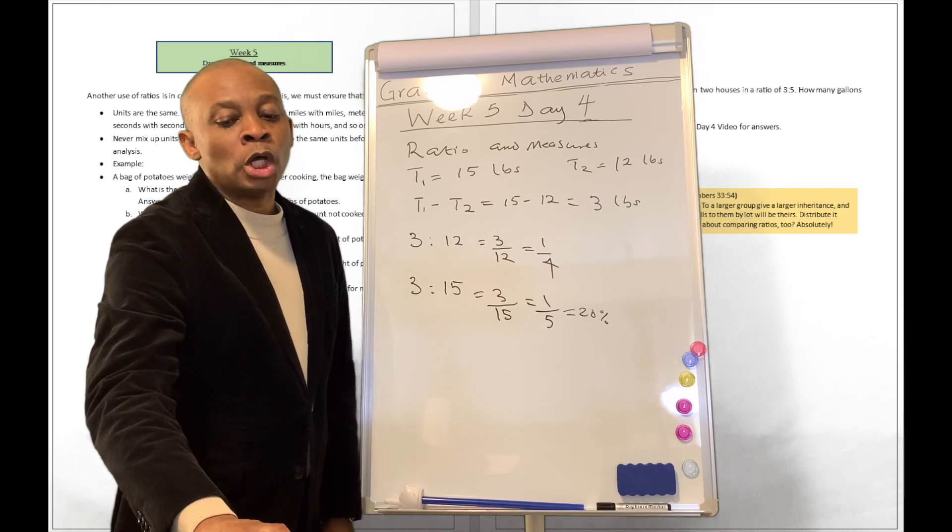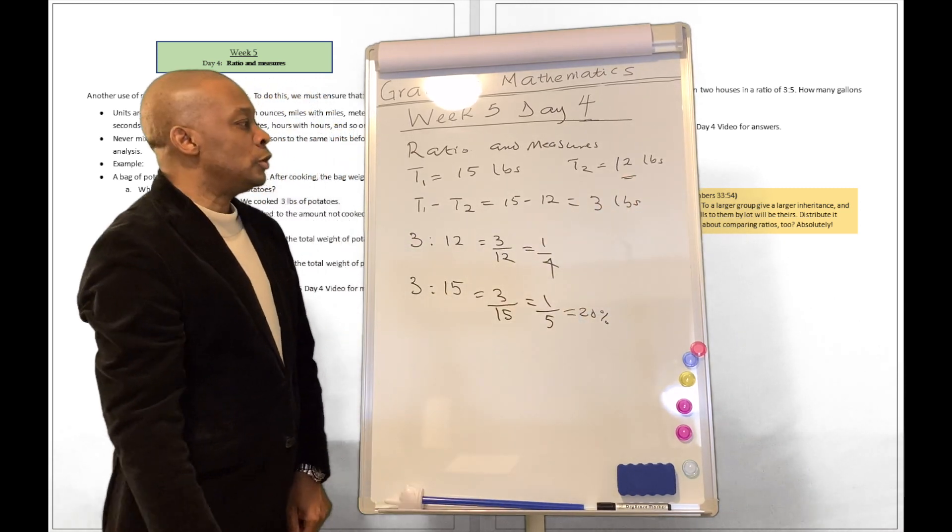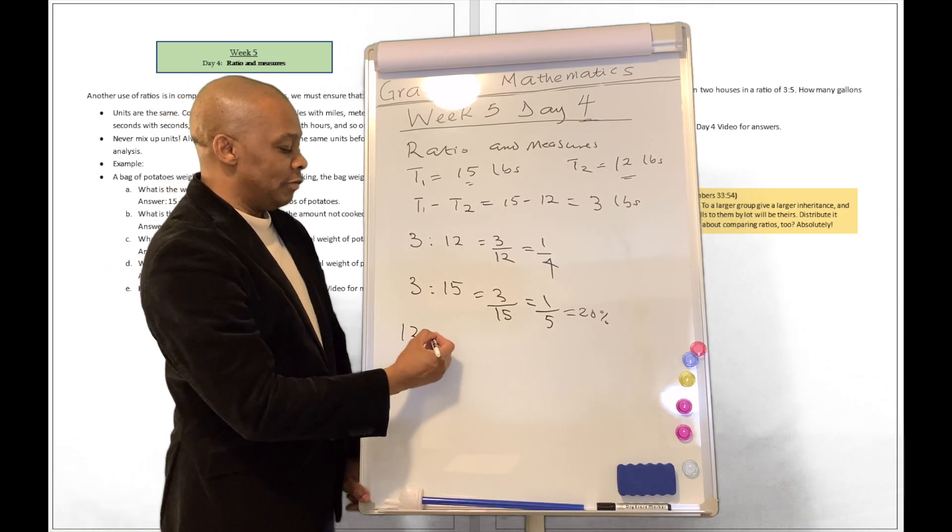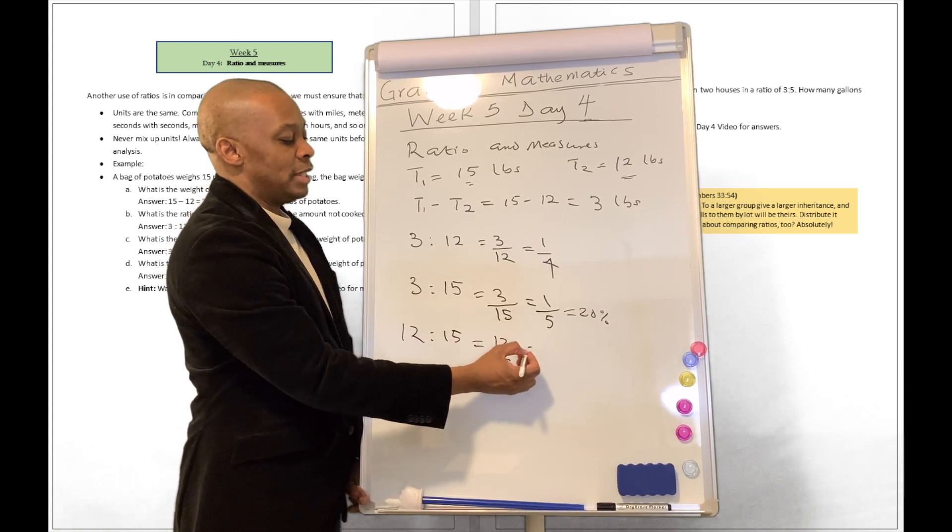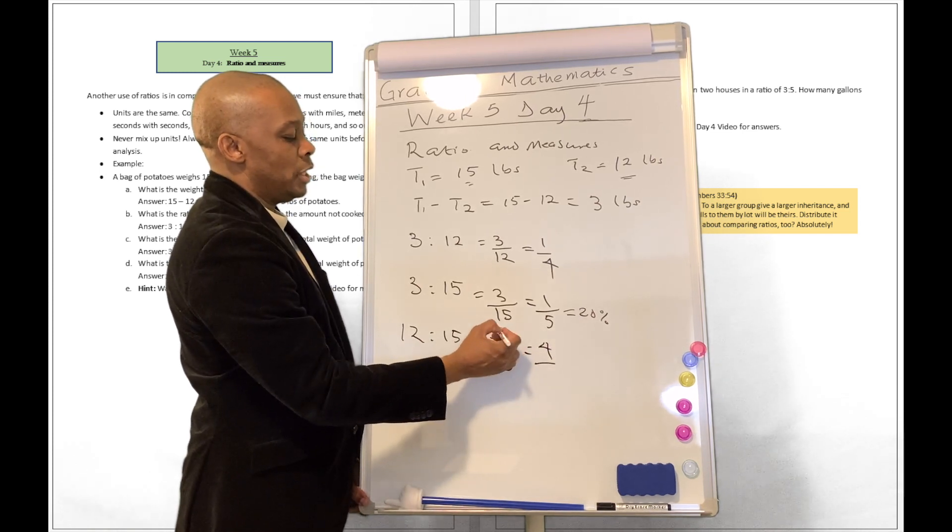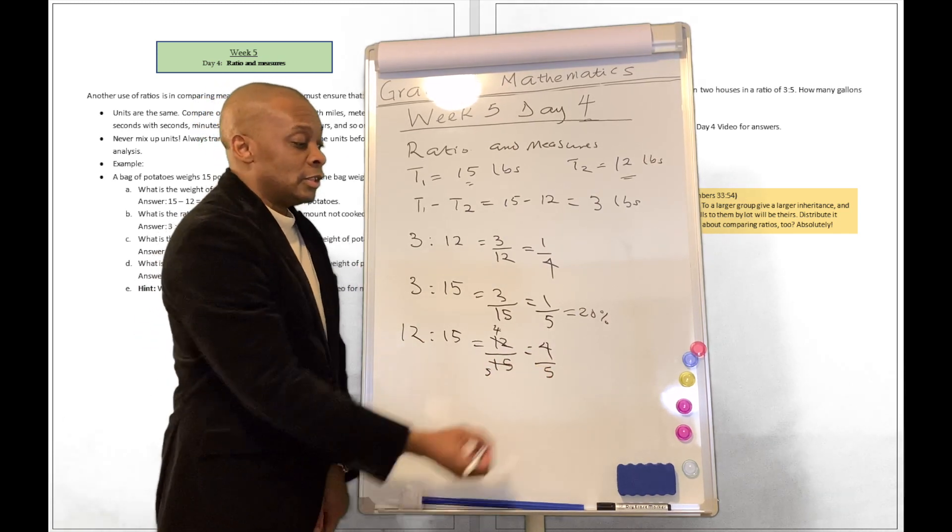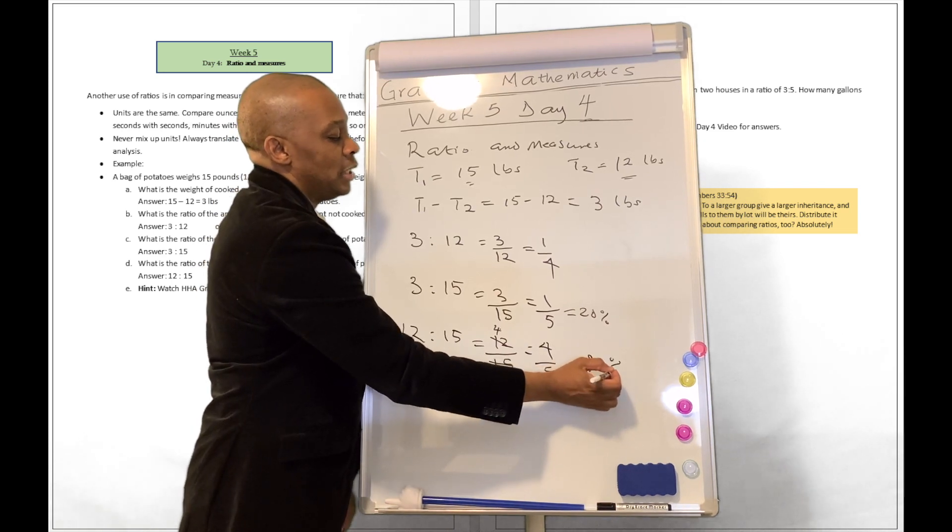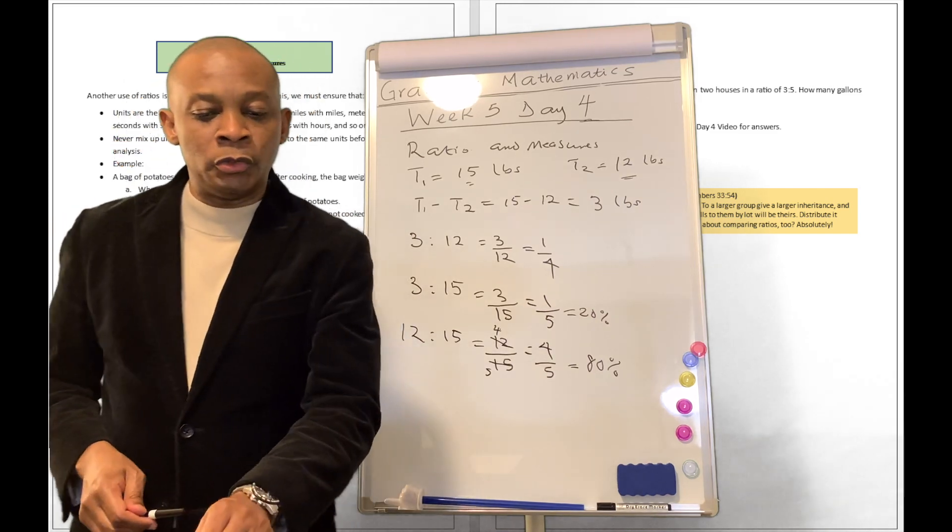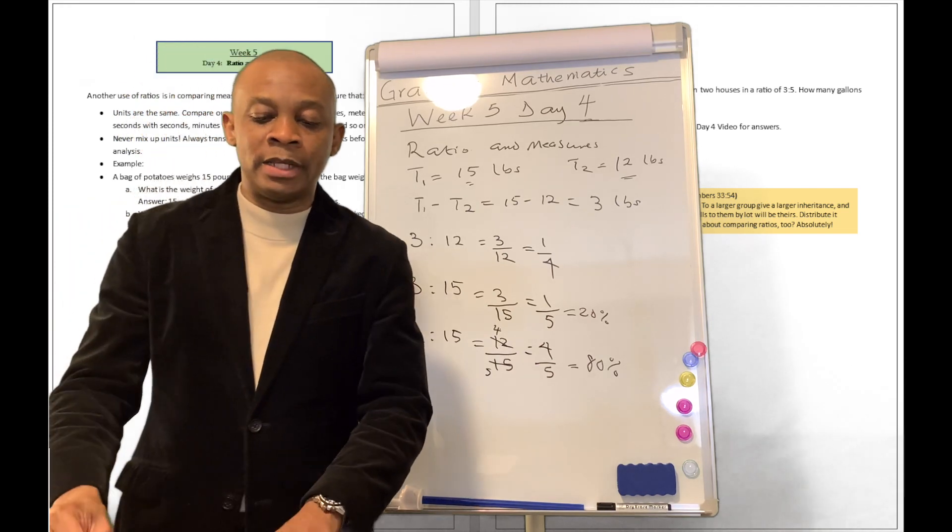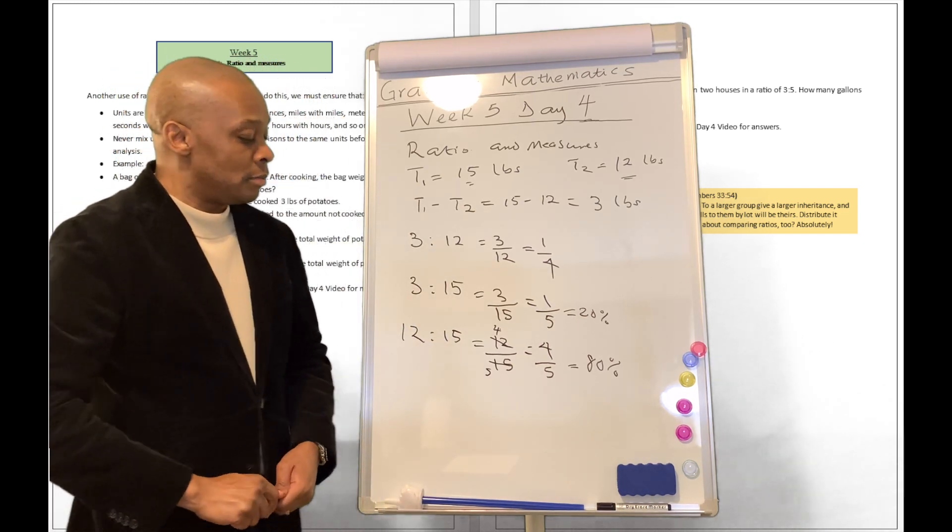What is the ratio of the amount uncooked to the total weight of the potatoes? This is the amount uncooked, this is the total. That's going to be 12 to 15, which is equivalent to 12 divided by 15, and that is 4 divided by 5, approximately equal to 80%. So please go ahead and turn to page number 52 of your workbook. You are going to see additional explanations over there.